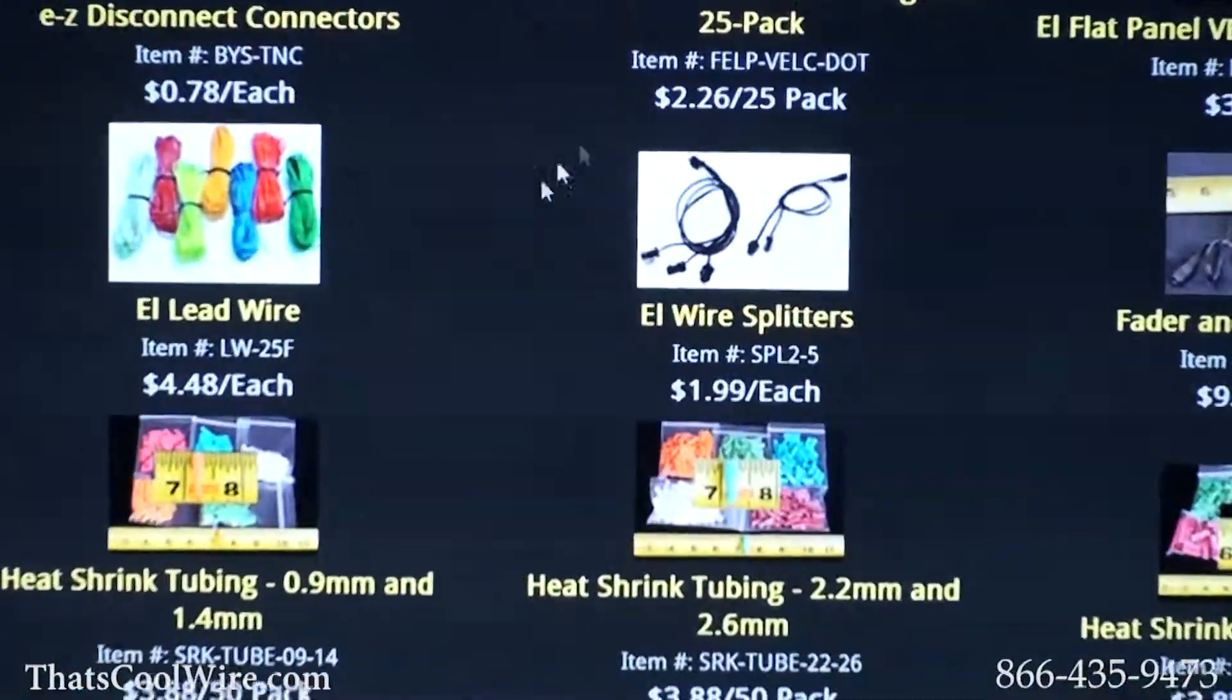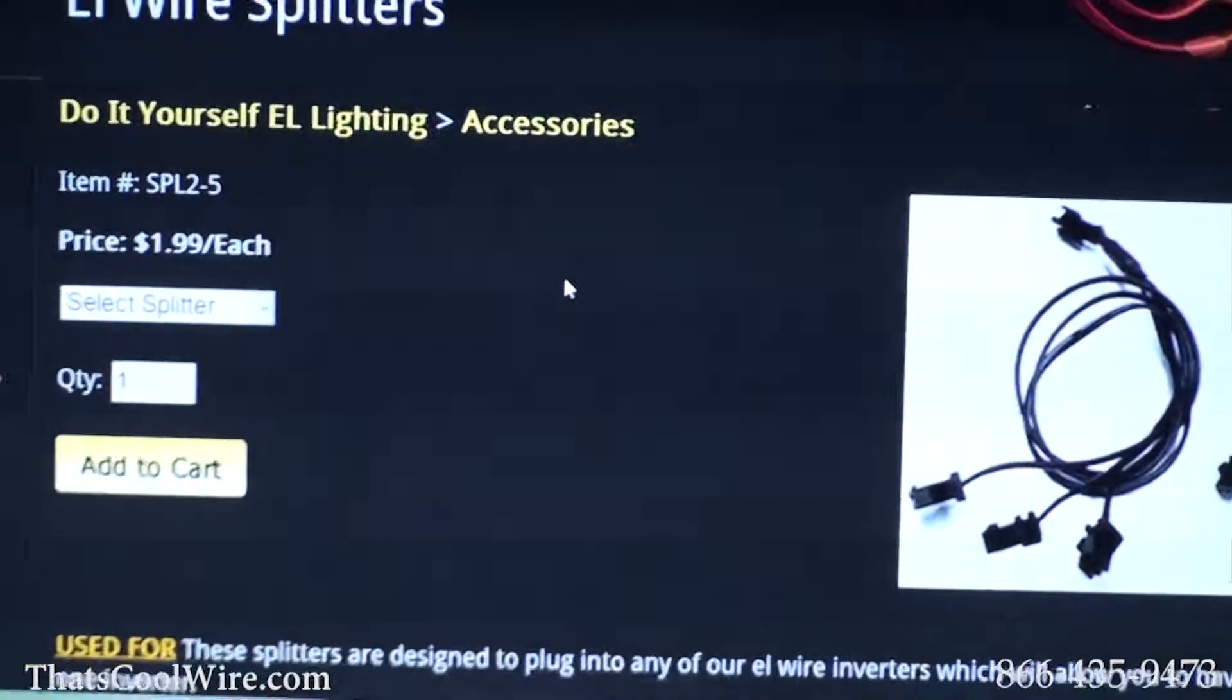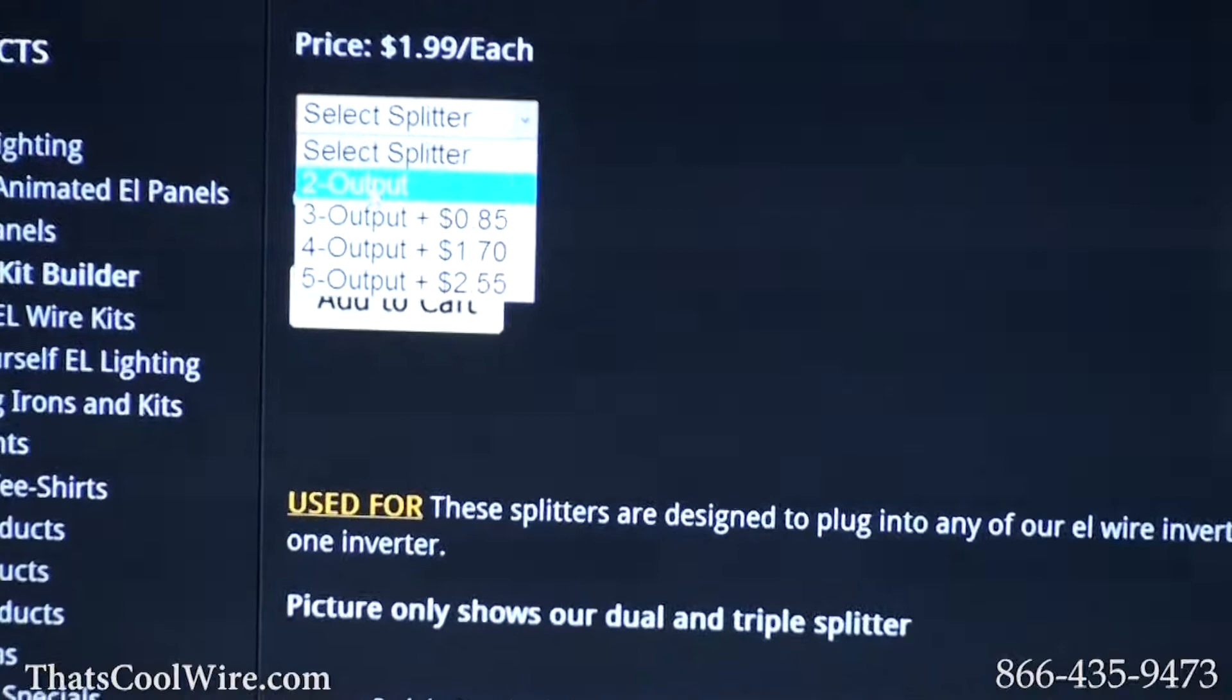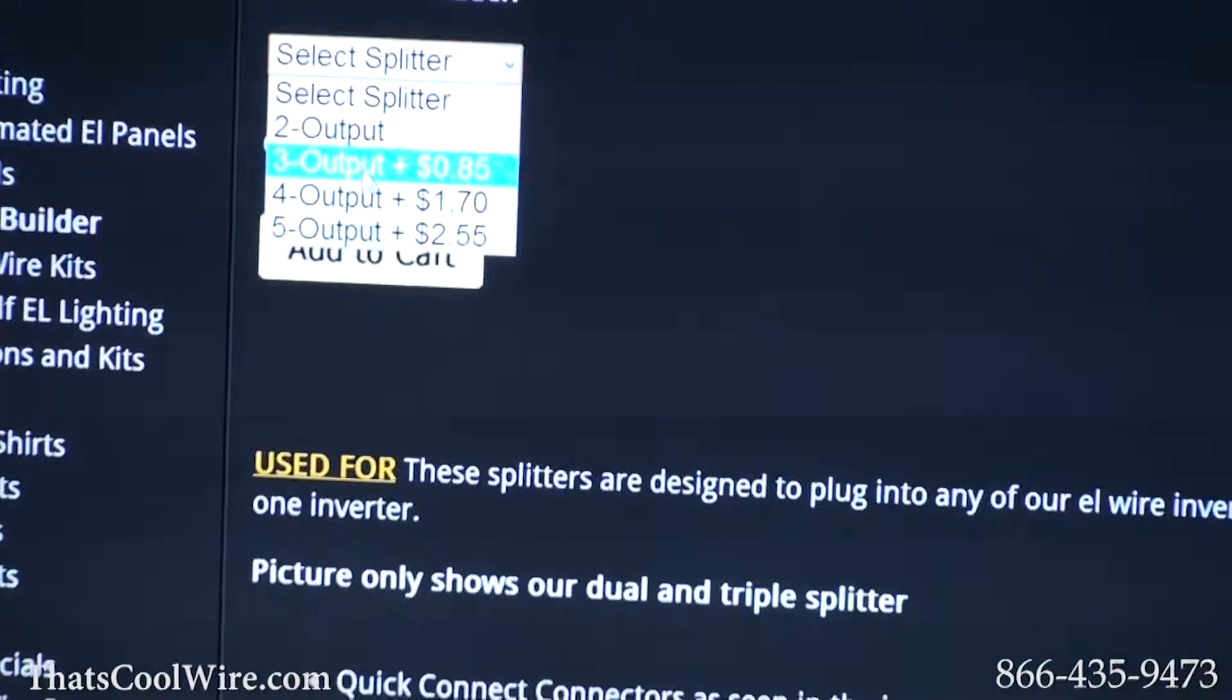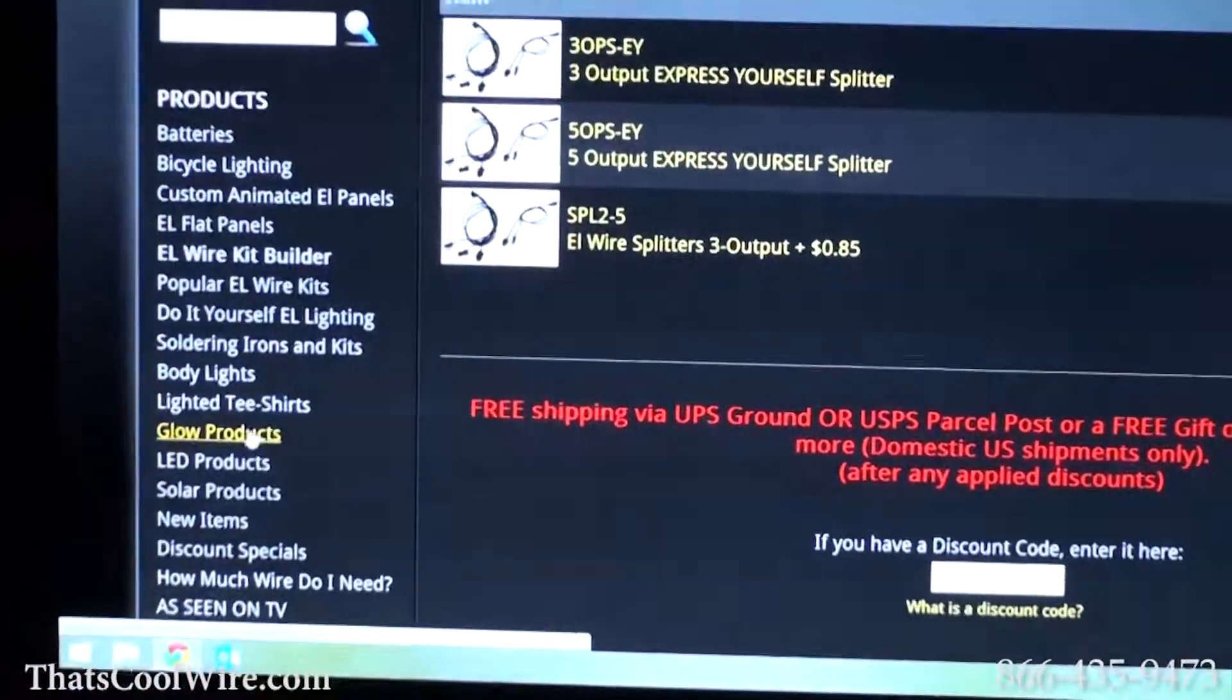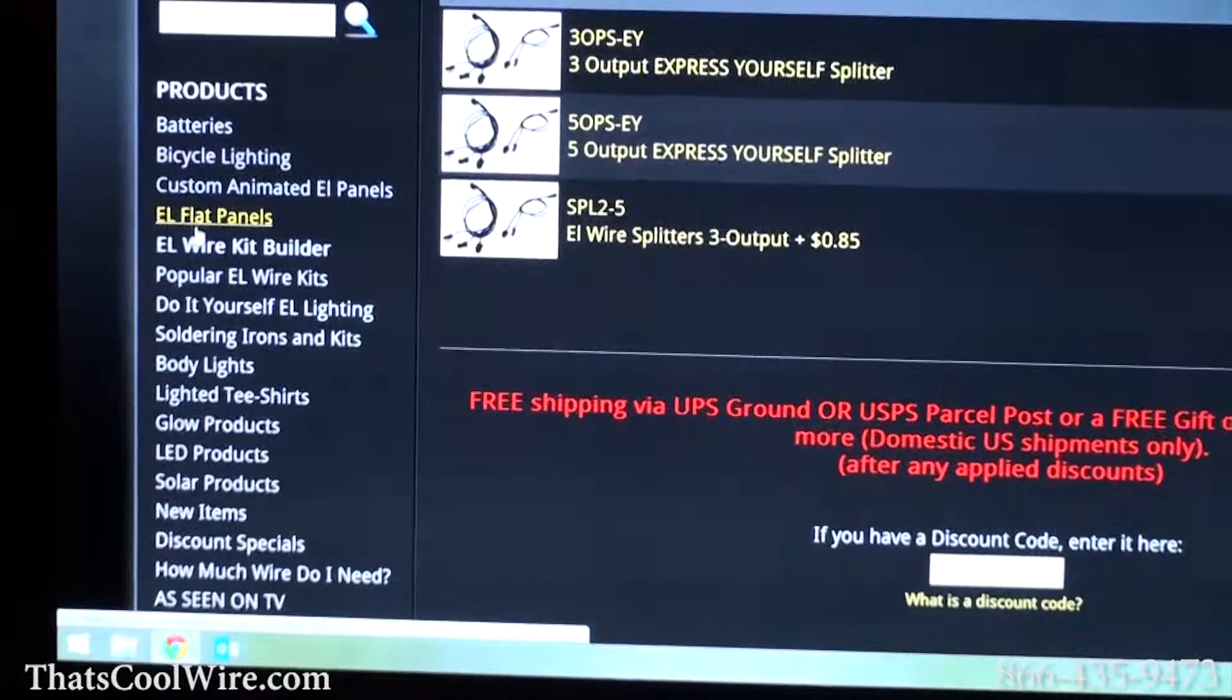Second row down, right here it says EL Wire Splitters. The issue with this page is if you only need one splitter then you're good to go. So here you would use the drop-down box, either have a two, three, four, or five output splitter. So let's just say we want a three output splitter, add to cart. You have to go back to the same page where you were to now order your second splitter. It's just easier if you go to EL Flat Panels and click on Express Yourself.